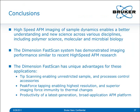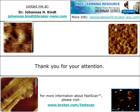In conclusion, high-speed AFM imaging of sample dynamics enables better understanding and new science across various disciplines including polymer science, molecular biology, and microbial biology. The Dimension FastScan system has demonstrated imaging performance similar to recent high-speed AFM research. Tip scanning enables unrestricted sample size and provides space for process control accessories. Peak force tapping enables the highest resolution and superior imaging force immunity to thermal changes. The Dimension FastScan provides the productivity of a latest-generation AFM designed for a broad range of applications. Thank you for your attention.